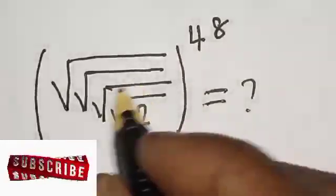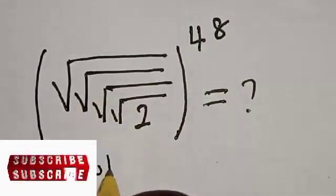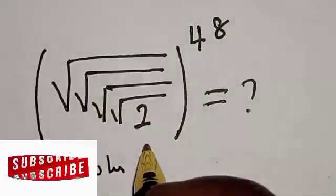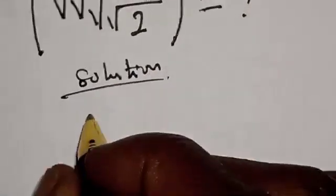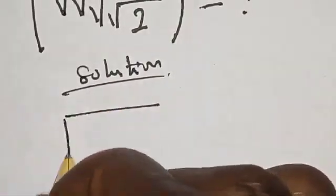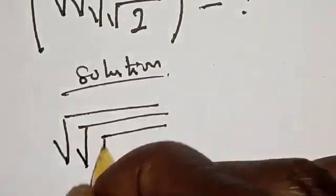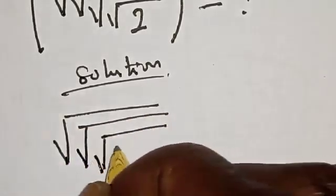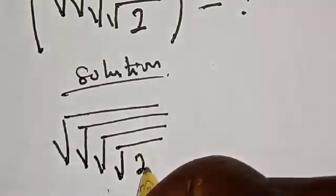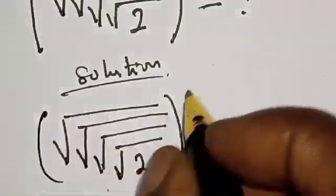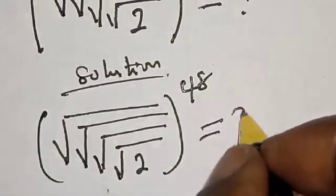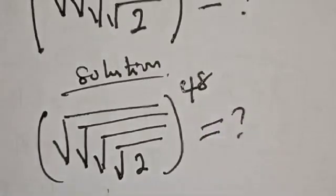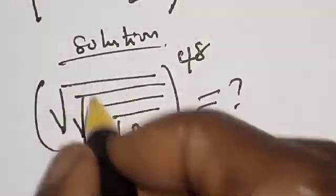For the solution, we have the given question: root, then another root, then another root, and another root of 2, everything raised to the power of 48. Now, what do we do next?